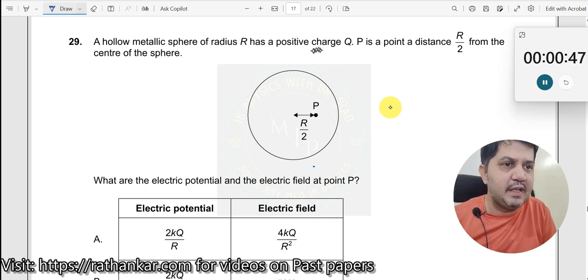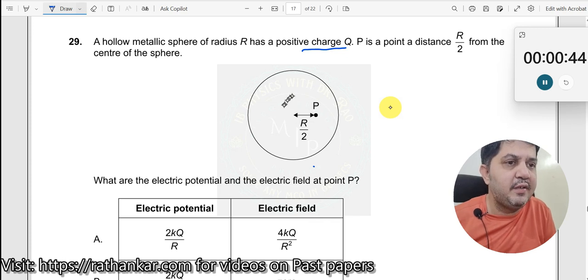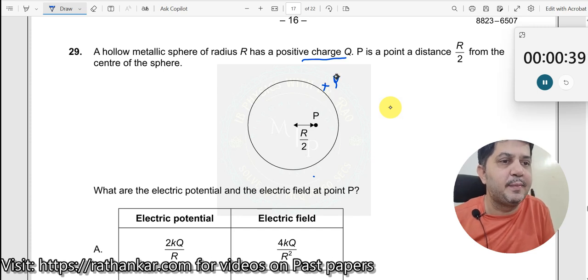Whenever there is a positive charge Q, it will not lie anywhere inside the hollow metallic sphere. It will always lie along the surface of the hollow metallic sphere.